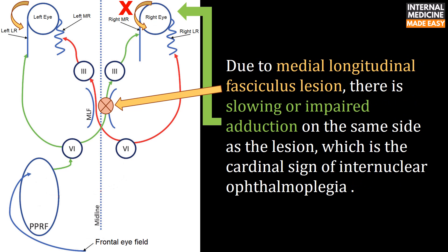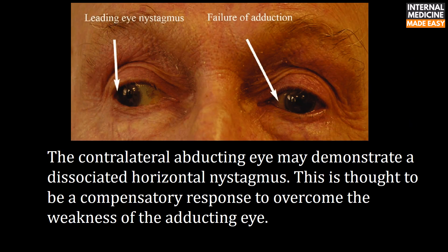Due to a medial longitudinal fasciculus lesion, there is slowing or impaired adduction on the same side as the lesion, which is the cardinal sign of internuclear ophthalmoplegia. The contralateral abducting eye may demonstrate a dissociated horizontal nystagmus, thought to be a compensatory response to overcome the weakness of the adducting eye.